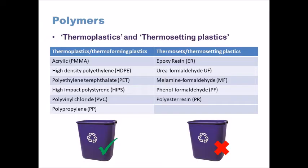Another common use for thermosetting plastics is urea formaldehyde, used for plugs and plug sockets. If there is a loose connection causing a short circuit, heat could be generated and cause a fire. A thermoset is advantageous here because, number one, all plastics are generally good insulators, and number two, it resists heat, preventing a fire within the house.